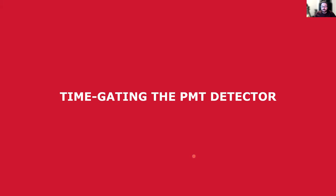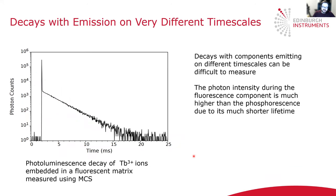That's the end of the different measurement modes. The next section covers how you can time-gate the PMT detector in the FLS1000 and what the advantages of this are. In all the previous examples, the decays were occurring on roughly the same timescale — either fluorescence decays, delayed fluorescence on a microsecond timescale, or phosphorescence on a millisecond timescale. However, it's quite common to have samples where you have emission occurring on very different timescales within the same sample.